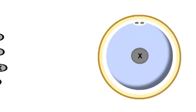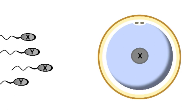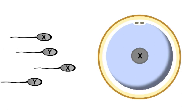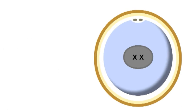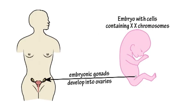However, if the sperm that fertilizes the egg contains an X chromosome, the resulting zygote has a pair of X chromosomes. And by default, the gonads of the embryo develop into ovaries, resulting in a child that is a girl.